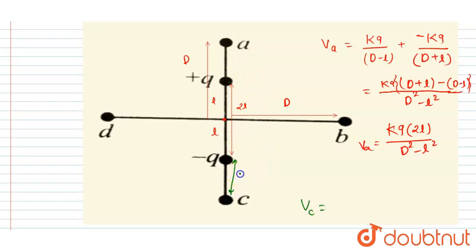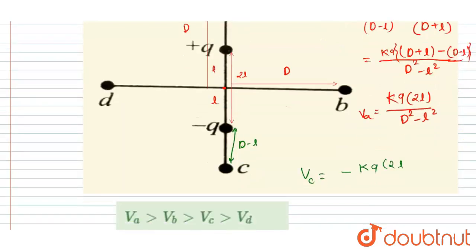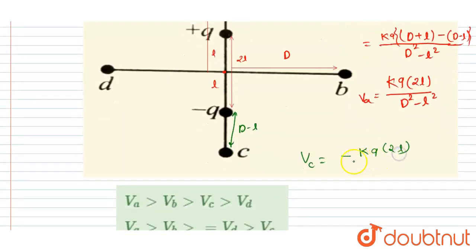So this distance is d plus l, right? Okay, so here in place of plus q, just minus q will come and the magnitude will remain the same, since you can see just positive charge is replaced by negative charge and negative charge is replaced by positive charge. So I will just replace the q by minus q, so I will get this.